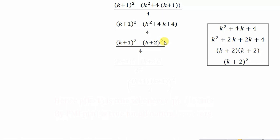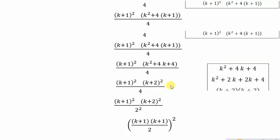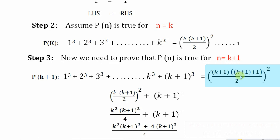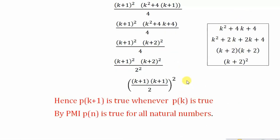In the answer we need a whole square. We have (k+1)² from the common factor, and (k+2)² from the factored term, and we can also write the 4 in the denominator as 2². So the whole expression can be written as [(k+1)(k+2)/2]², which is exactly what we wanted. Hence left hand side equals right hand side, P(k+1) is true whenever P(k) is true, and by the Principle of Mathematical Induction P(n) is true for all natural numbers.